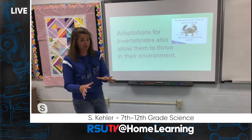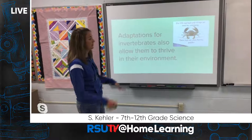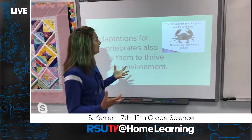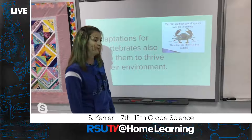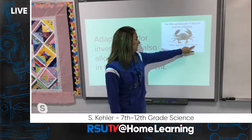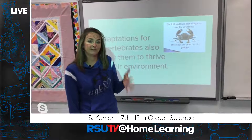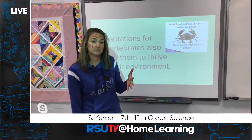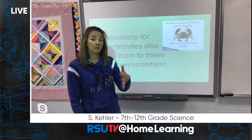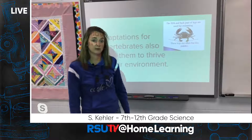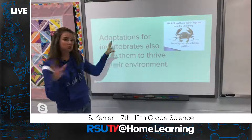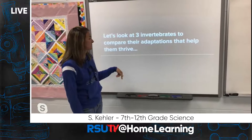For invertebrate adaptations, I picked an interesting example: a crab. The fifth and back pairs of legs are used for swimming — they're flat like paddles. Think about the fins of a fish: they're flat to have as much surface area as possible. The more surface area, the more impact on the water as it moves. These aquatic crabs use those flat legs to paddle through the water. So adaptations are what makes it different and why they have it. We're going to look at three different invertebrates today to compare their adaptations.